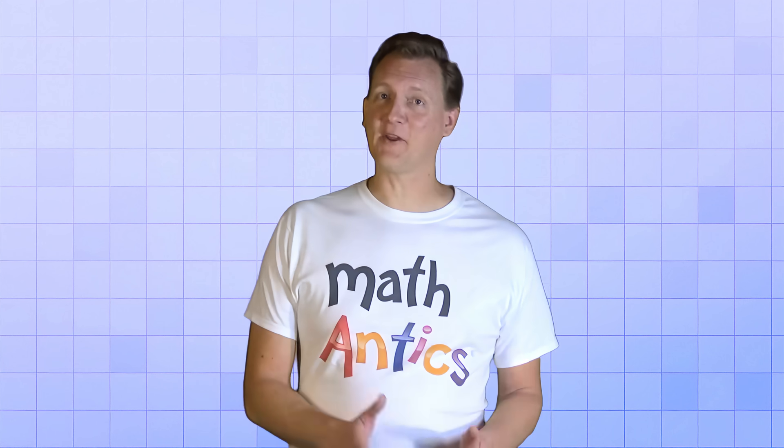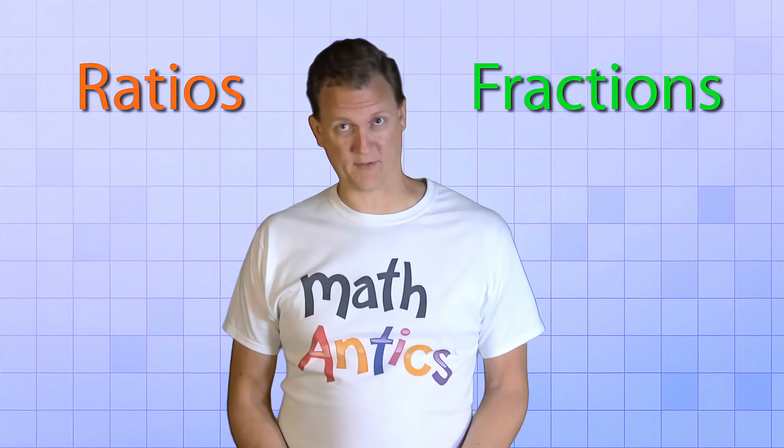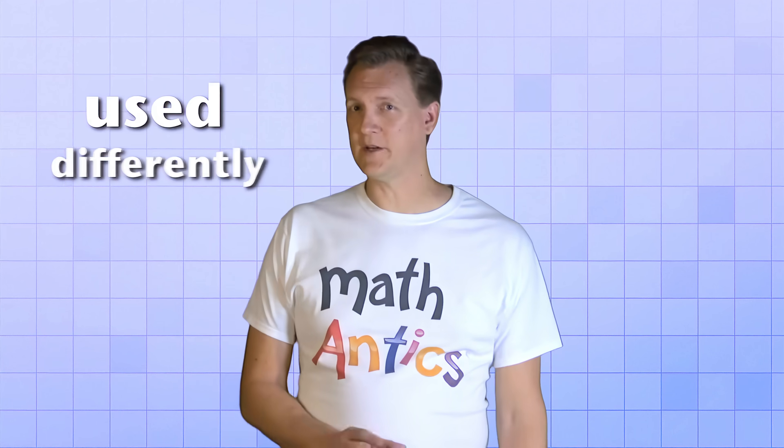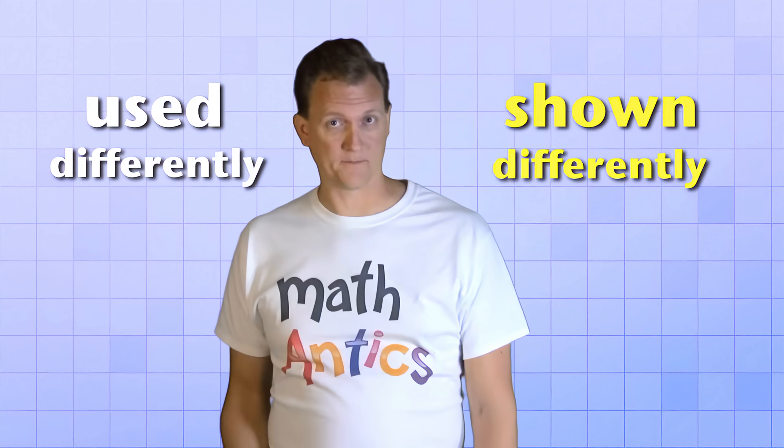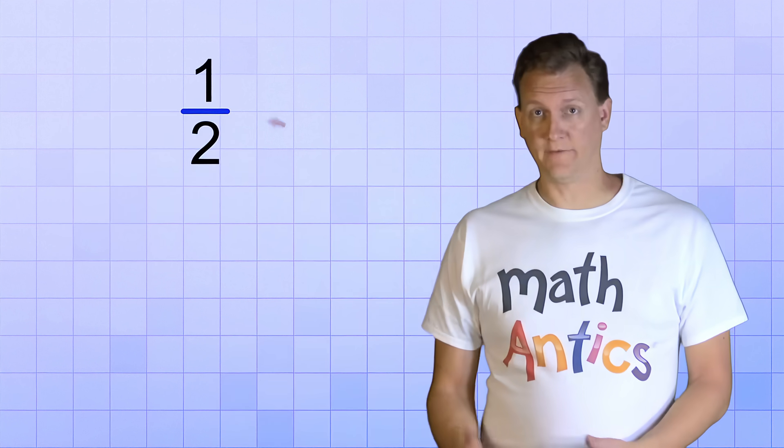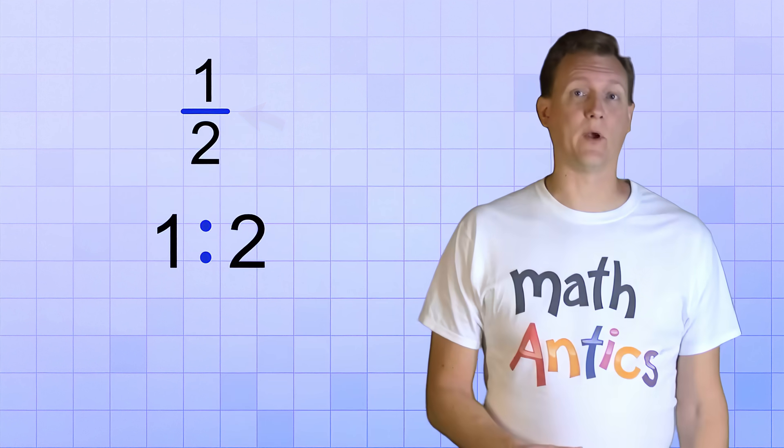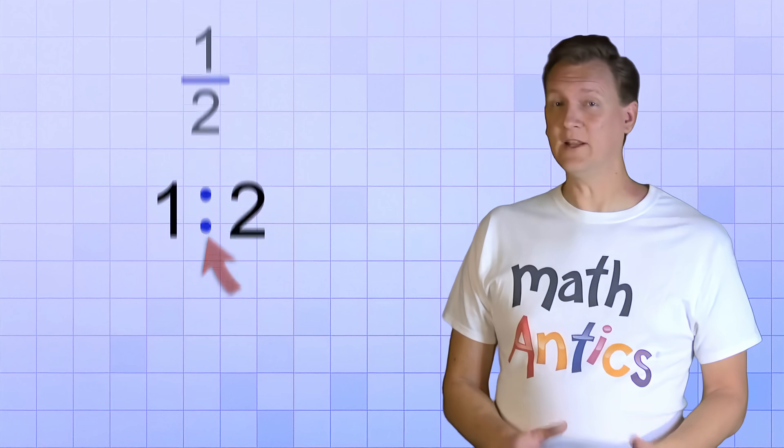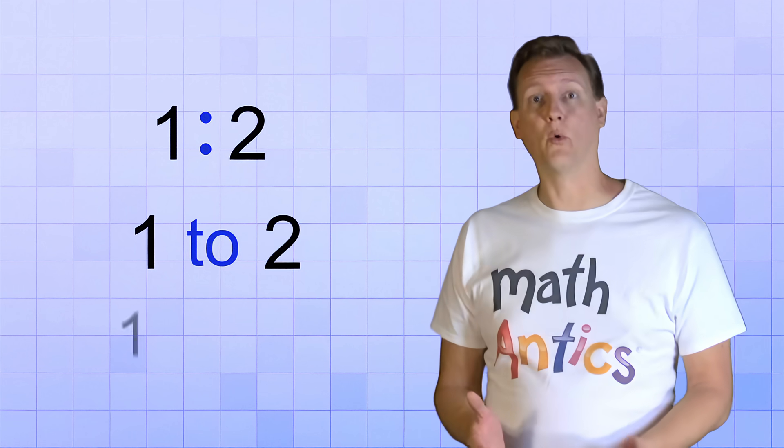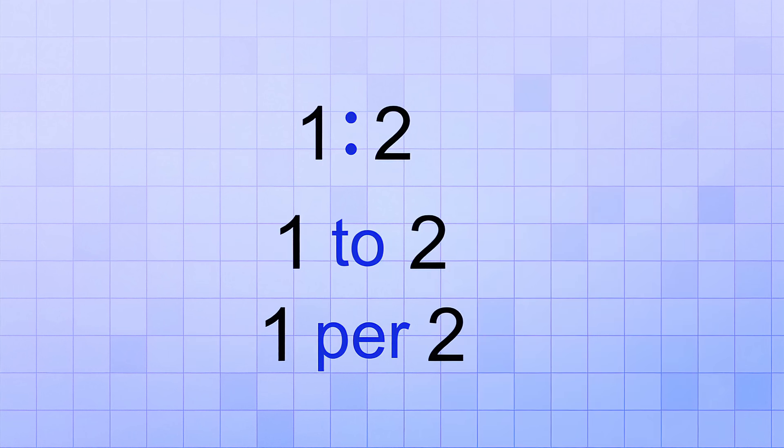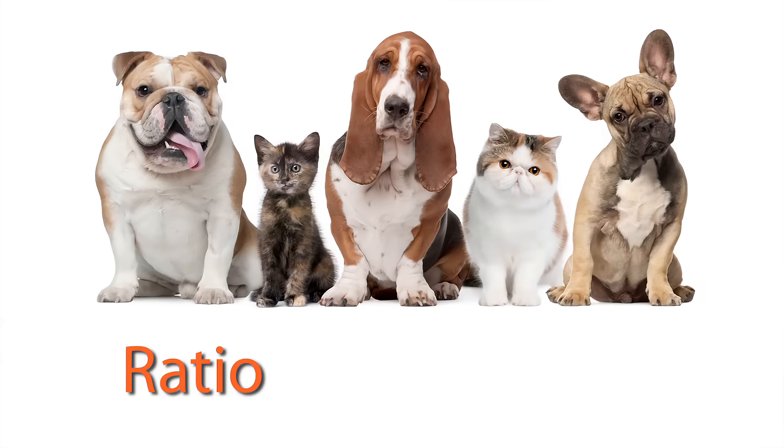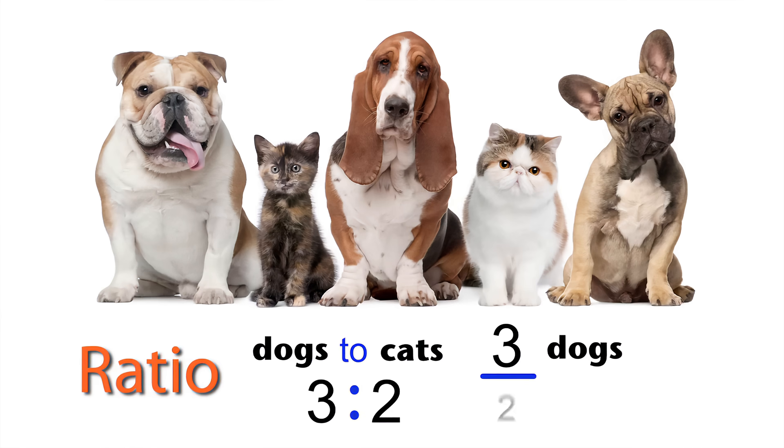So now you know that fractions and ratios are basically the same thing. But since they're used differently in math, sometimes they're also shown differently. Once in a while, instead of seeing the standard division form, a ratio might be represented with this symbol. When you see a ratio written this way, it just means 1 to 2, or 1 per 2. For example, in this picture, you could say that the ratio of dogs to cats is 3 to 2, 3 dogs to 2 cats. And you could also write it in the standard division form, 3 dogs over 2 cats. They're just different ways to write the same ratio.